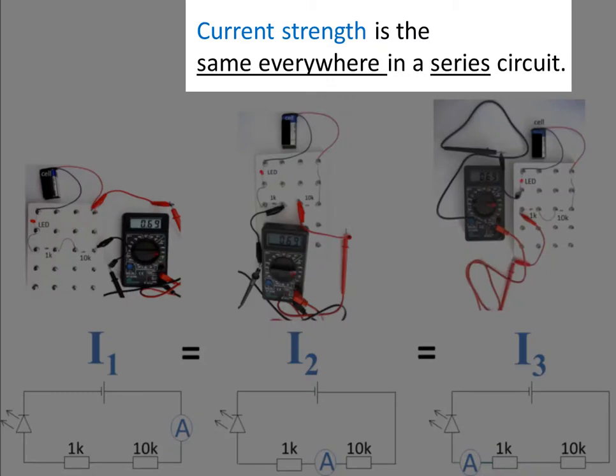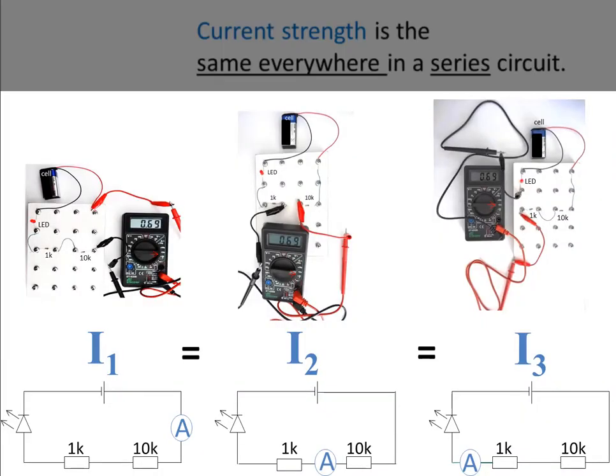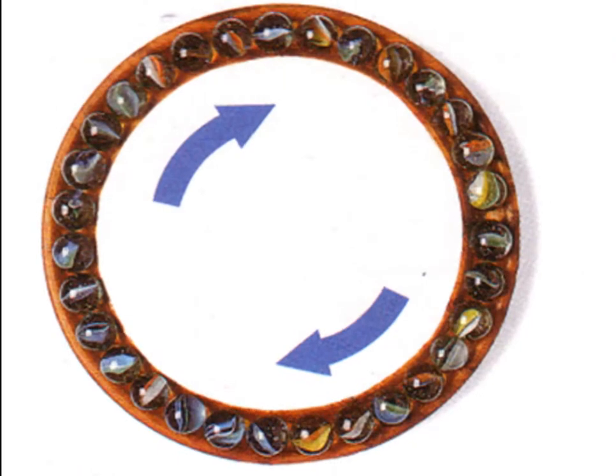We know that current strength is the same everywhere in a series circuit — it doesn't matter where we place an ammeter in a series circuit, it will read the same value anywhere. That's because electrons, like marbles, are incompressible. Just like you can't make some marbles move faster than others in a marble circuit, electrons in a series circuit flow at the same rate through all points.